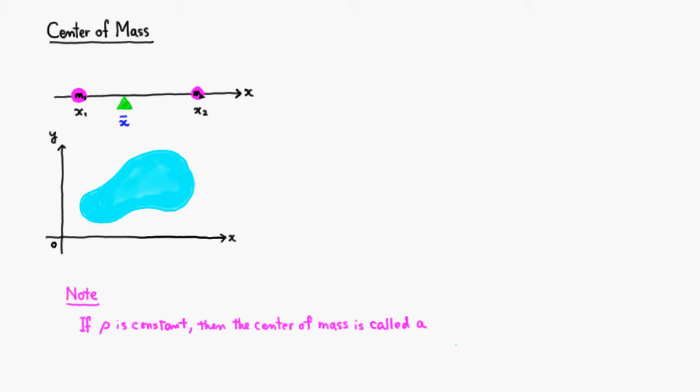Alright, let's look at the center of mass. Let's say on the x-axis you have a mass m1 and mass m2. And m1 is located at x1 on the x-axis and m2 is located at x2.